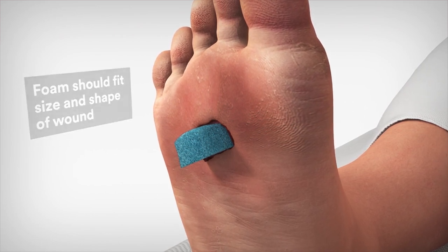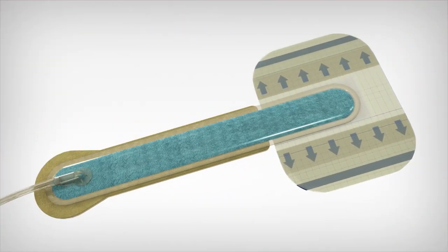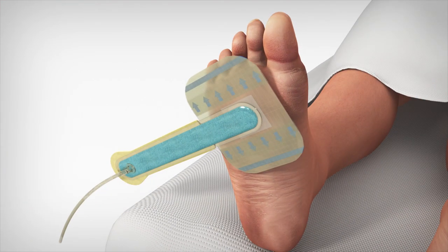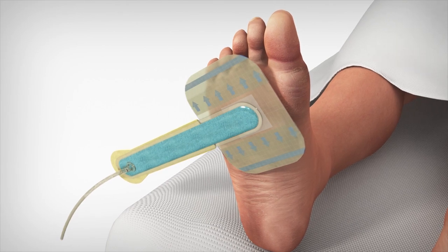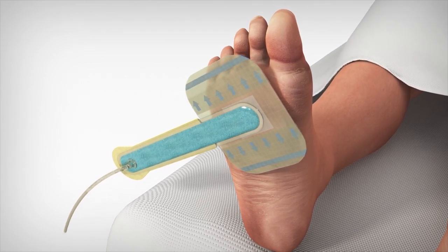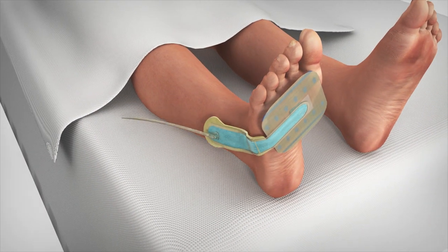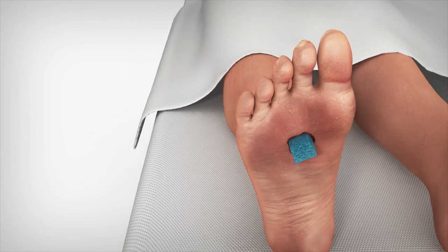Since this wound is on the plantar surface of the foot, it can be beneficial to use the SNAP bridge dressing, which positions the port and the tubing away from the wound to minimize the chance of additional pressure points. The best orientation of the dressing is determined so that the bridge portion of the dressing will lie flat on the extremity and the port is located on a non-weight-bearing surface.